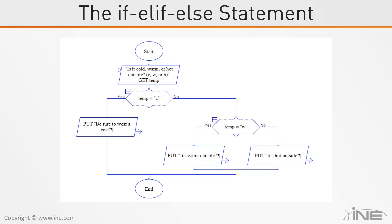If we run this program again with a different user who puts in an H, it will check temp equals C — no. It will follow the no side down the flowchart, then check again if temp equals W — also no, because the user put in H. So it would follow the no side and print 'it's hot outside,' and then the program would end.